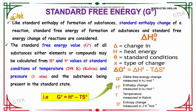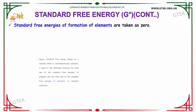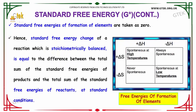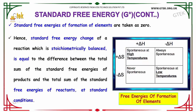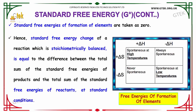The standard free energy of formation of elements is taken as zero. The standard free energy change of a reaction, which is stoichiometrically balanced, equals the difference between the total sum of the standard free energies of the products and the total sum of the standard free energies of the reactants at standard conditions.